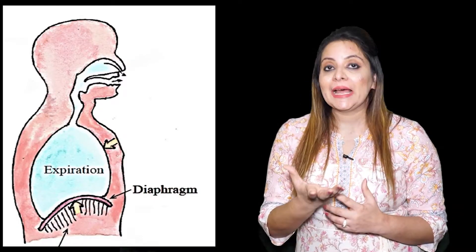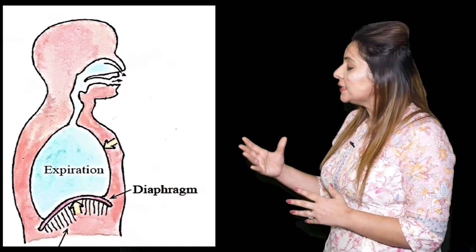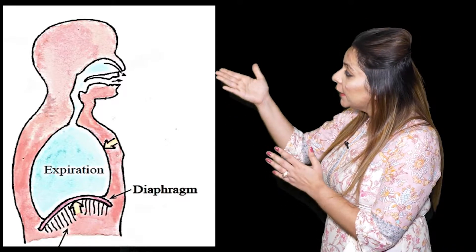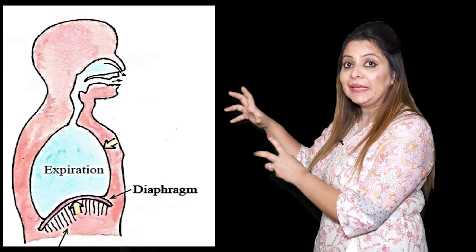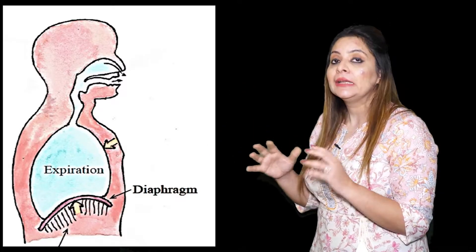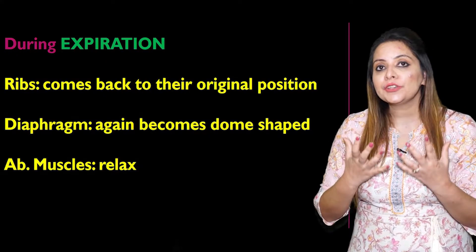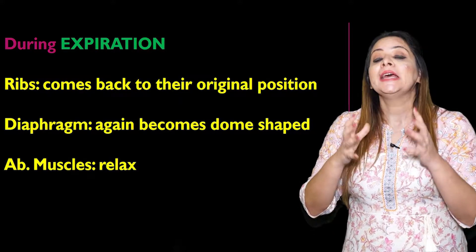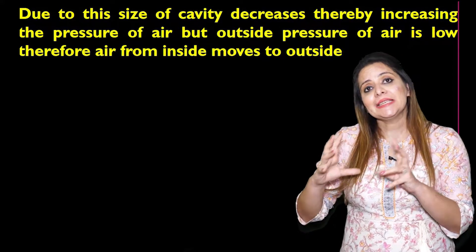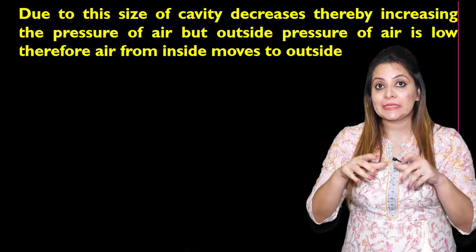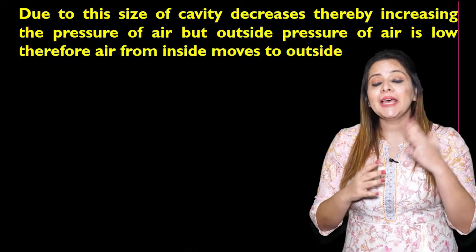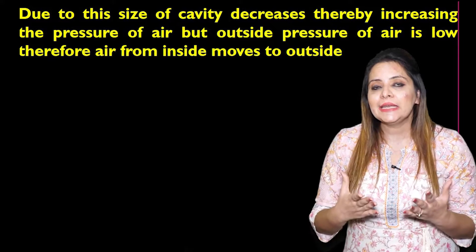During exhalation, the ribs move back to their original position, the diaphragm regains its dome shape, and the abdominal muscles relax. This decreases the cavity size, increasing the partial pressure of CO₂ inside. Since the partial pressure of CO₂ is lower outside, carbon dioxide is exhaled out. This is how the mechanism of breathing takes place.